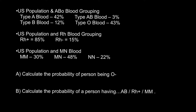Hello and welcome to Nikolai's genetics lessons. In this video I'm going to show how to solve probability problems in genetics using rules of probability. Here are some statistics: in the United States about 42% belong to the blood group A, about 12% belong to blood group B, and 3% of the population belong to blood group AB.